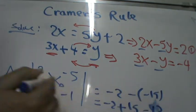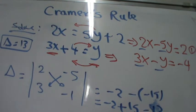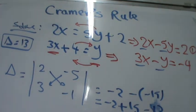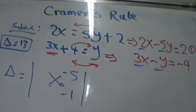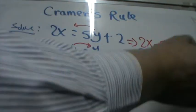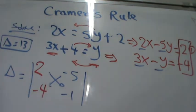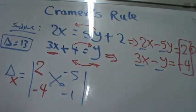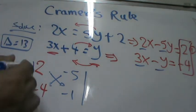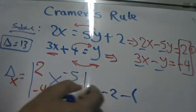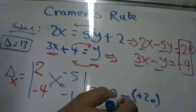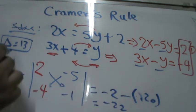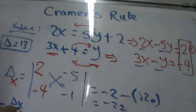To get delta sub x and delta sub y, remove their respective columns and replace with the constants. The constants are 2 and negative 4. For delta sub x: 2 times negative 1 equals negative 2, minus negative 5 times negative 4 equals positive 20. So negative 2 minus 20 equals negative 22. Therefore x equals delta sub x over delta, which is negative 22 over 13.